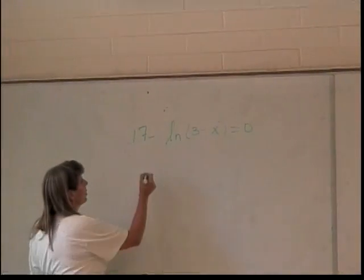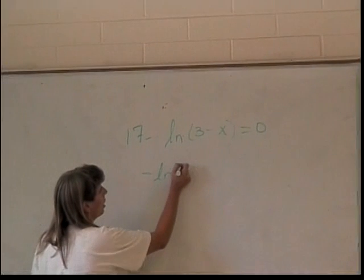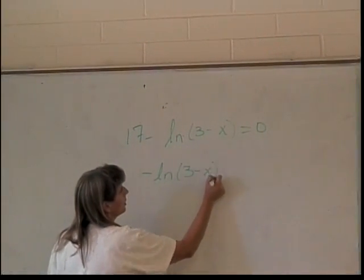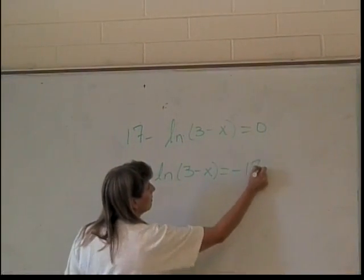Okay, move the 17 over. So I'll have negative natural log of 3 minus x equals negative 17. And now what?